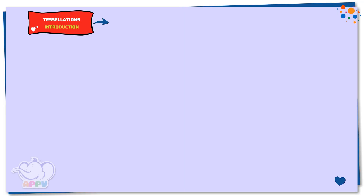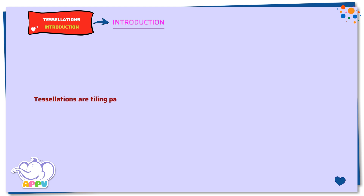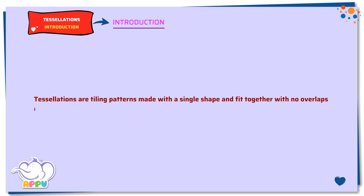Tessellations — Introduction. Tessellations are tiling patterns made with a single shape and fit together with no overlaps or gaps in between.